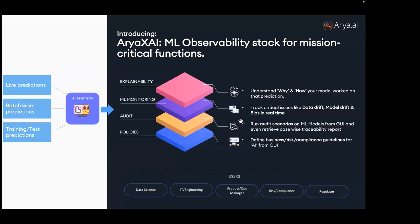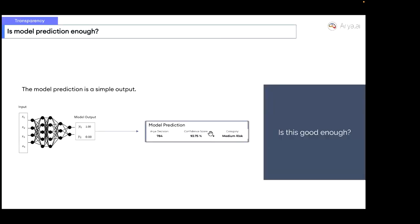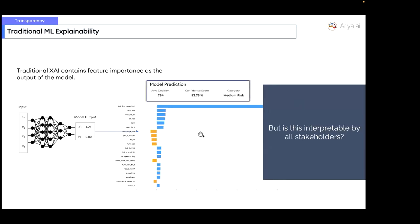The ML observability platform needs to be a common platform bridging builders (data science teams, ML engineers, engineering teams, third-party vendors) and users (business teams, end customers). Ari has built a product called Aria XAI — Aria Explainable AI — an ML observability platform with four components: explainability, monitoring, auditing, and policy. As a case study using the Lending Club example, the model gives grade score predictions with confidence — but is this output alone good enough for an underwriter? No.